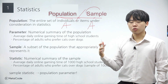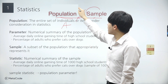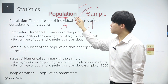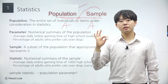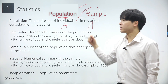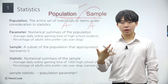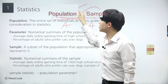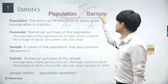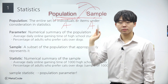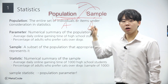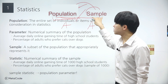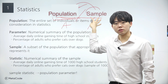Theoretically, statistics is the study of populations using samples as a means to understand the population. The reason behind studying samples in statistics is to eventually generalize insights to the population. Therefore, the process of studying data typically begins with samples. Consequently, when making inferences about a population, we rely on information gathered from its samples.